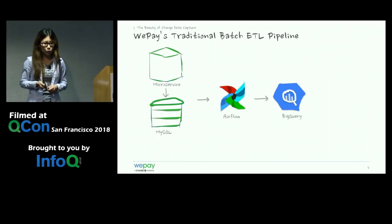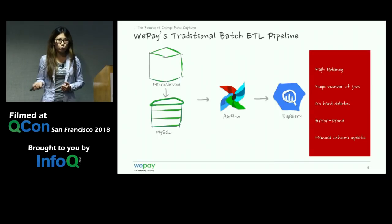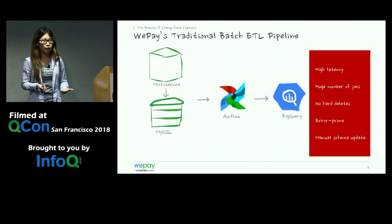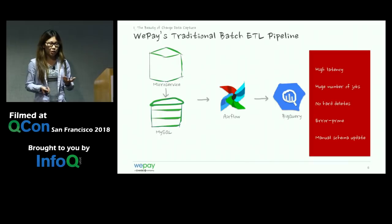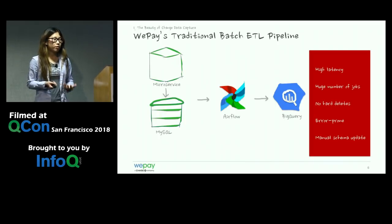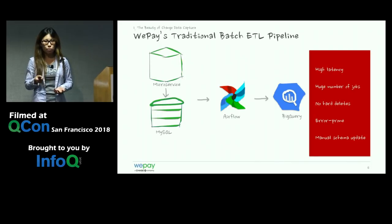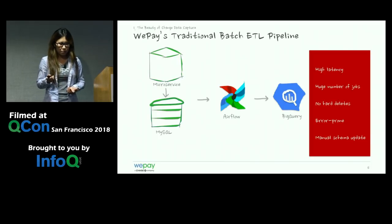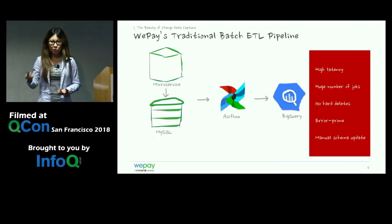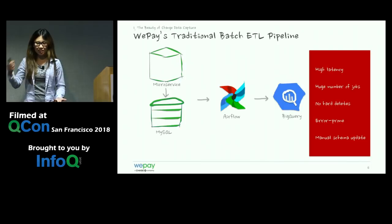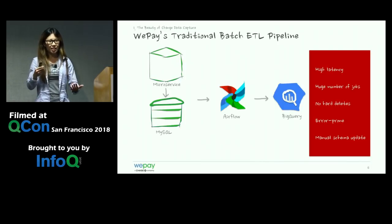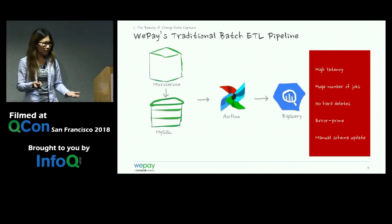With this approach, we started hitting limitations and operational overhead. The first problem is very high latency — data won't arrive in BigQuery until much later. Some jobs run every 15 minutes. But then we get inconsistencies where an analyst doing a join in BigQuery finds one table updated hourly and another every 15 minutes, causing data inconsistency.